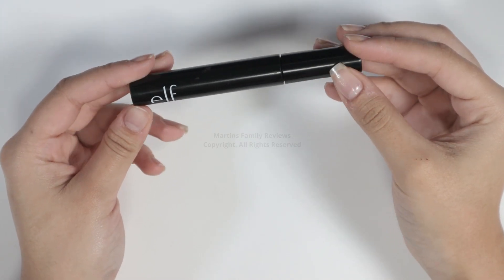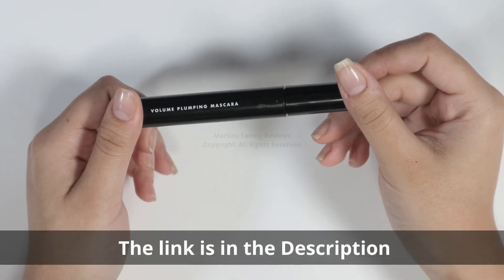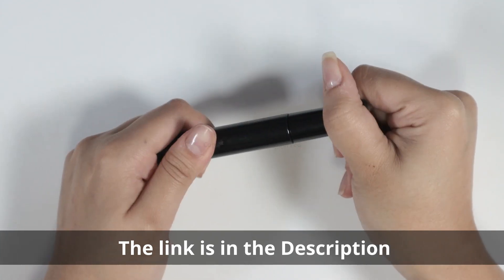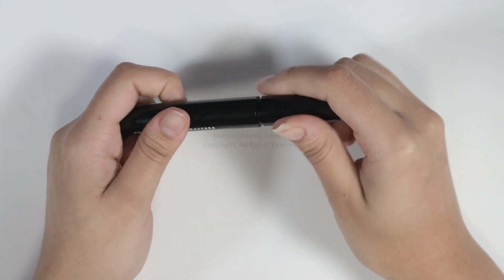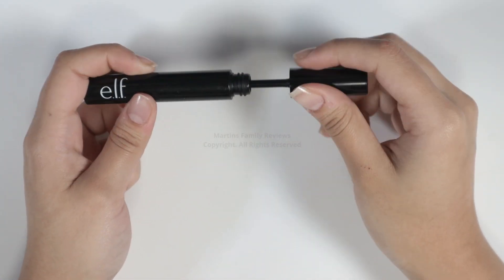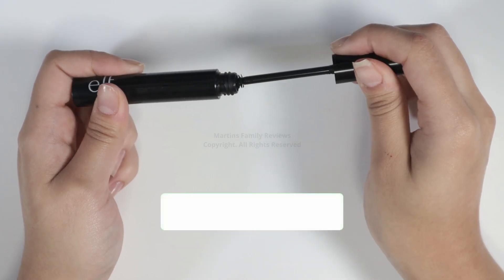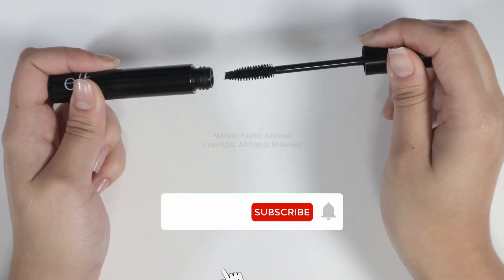Hey guys, let's talk a little bit about the ELF Cosmetics Volume Plumping Mascara. This is my go-to mascara for everyday use, and let me tell you guys, it even comes infused with Vitamin B to help your lashes grow.